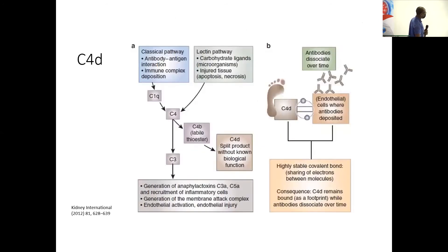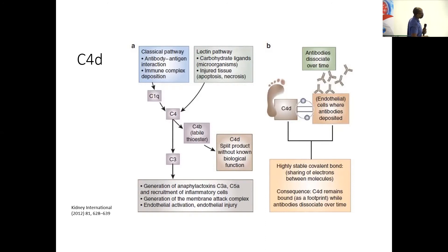It's not by coincidence that speakers on graft rejection did not talk about C4D, because C4D is actually a biologically inactive compound — it doesn't do anything we currently know of. C4D is a byproduct of the cleavage of C4, mostly through the classical pathway for rejection, but occasionally through the lectin pathway. Ironically, the fact that it doesn't do anything is useful to a pathologist, because it means it's not quickly removed from the tissue, unlike all the other active products cleared from circulation. We use C4D as a sort of footprint — because it hangs around so long — to tell us that antibody was here.